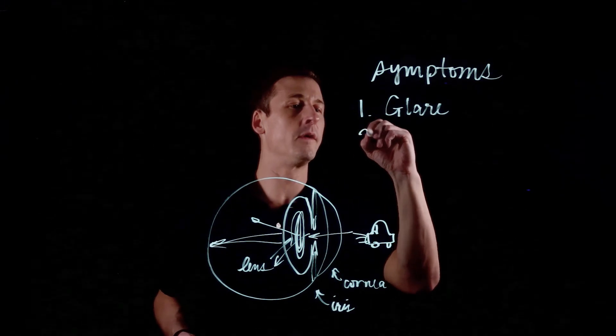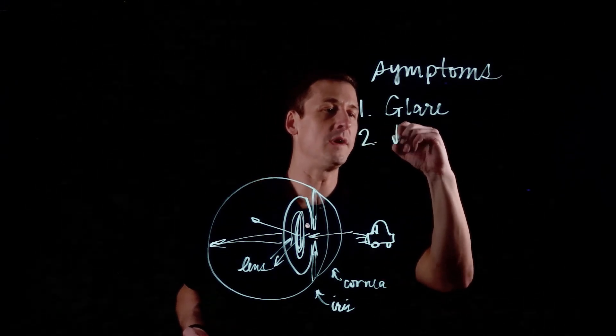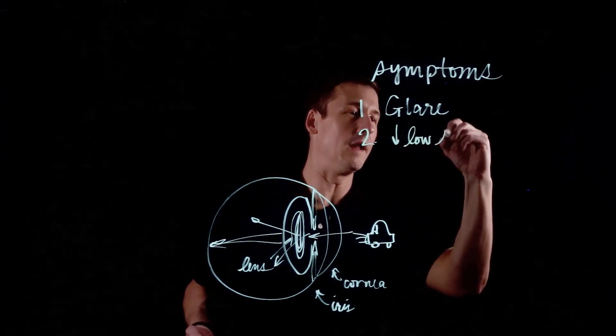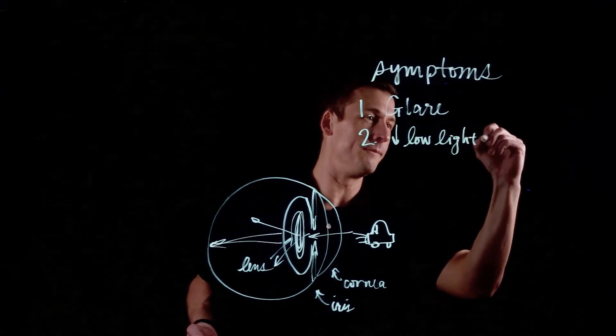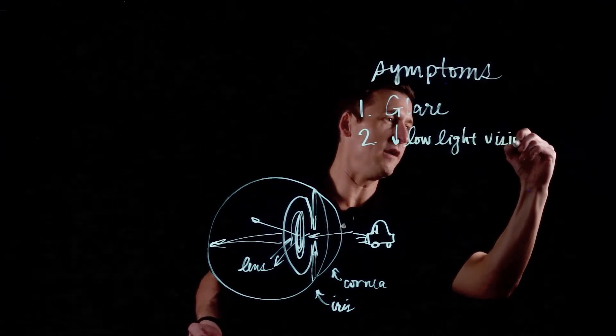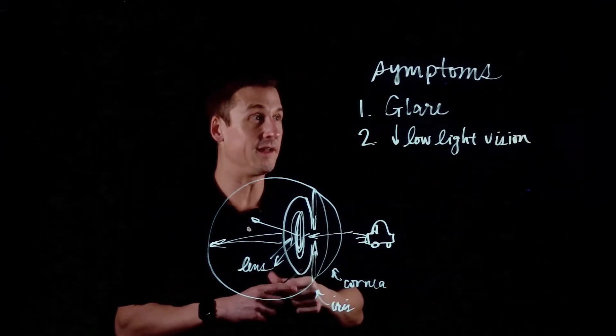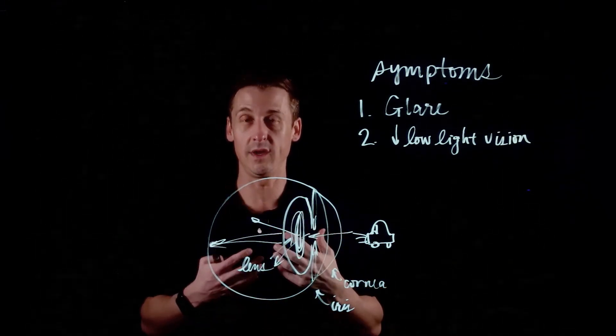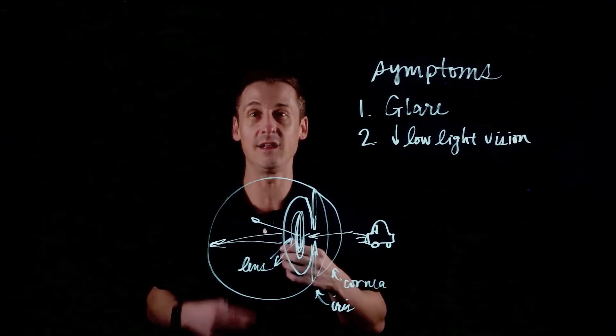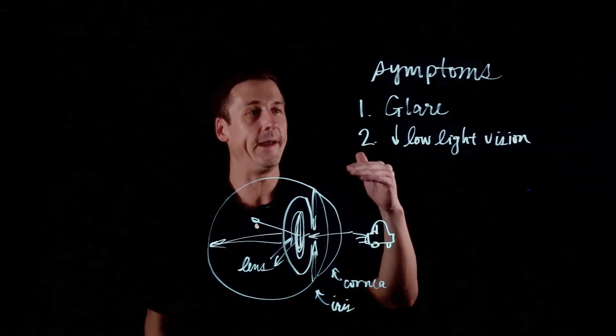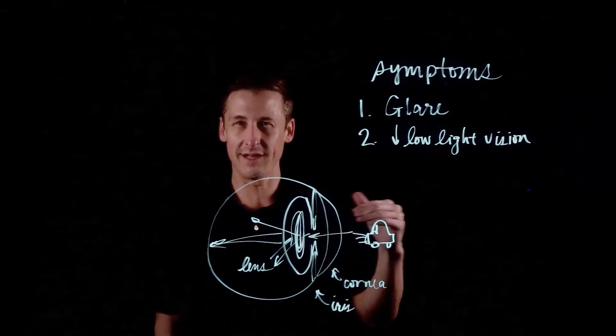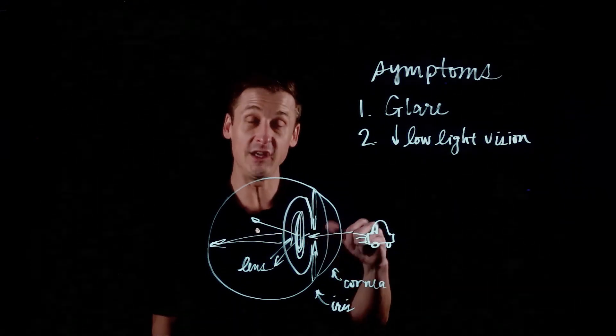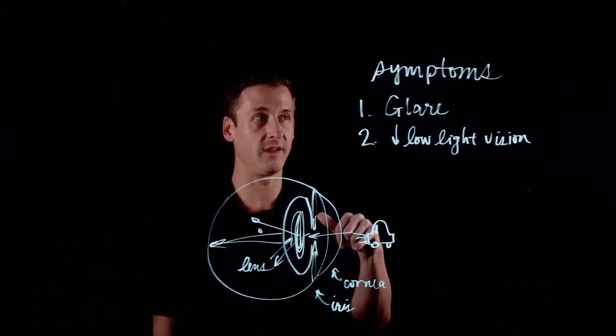The second is decreased low light vision. And so here's why that's different than glare. Glare is the light that's coming into your eye is getting sprayed in a way where you have distracting halos and starbursts, but it's still making it through. And just the extra light is spraying off. And it usually comes from point sources of light.